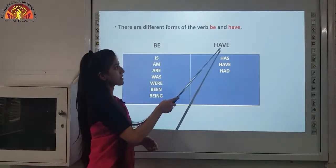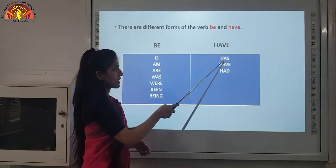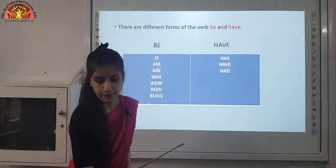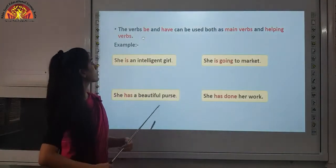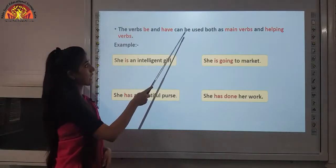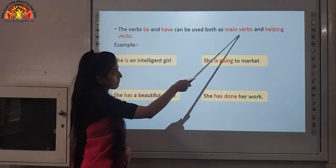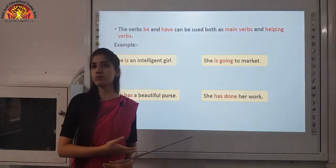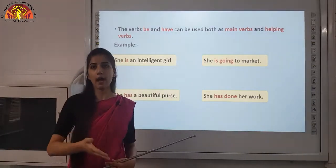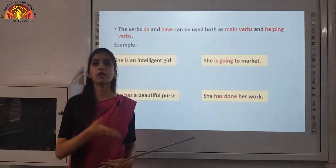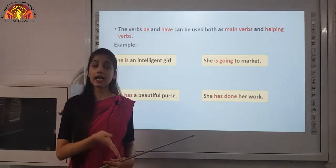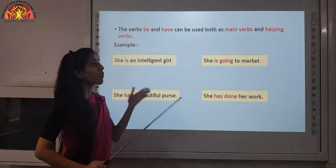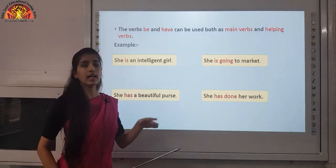The HAVE forms are: have, has, and had. These are the forms of HAVE. The verbs BE and HAVE can be used both as main verbs and helping verbs. We have studied the different forms — am, are, was, were, been, being, has, have, and had — and they can function as either a main verb or a helping verb.